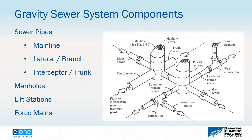With gravity sewers, the pipe is initially installed just below frost line at the highest point, but must slope continuously downward. At some point it becomes no longer economical or safe to dig a very deep trench, so a lift station is installed to lift the wastewater to a higher point, conveying it to either another gravity sewer or a force main. The need for lift stations and force mains is common in gravity sewer systems and depends on the topography.